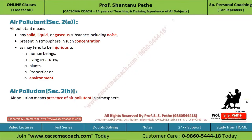The most important definition of this act is 'air pollutant' itself — note carefully, this definition appears in both exams. Air pollutant is defined under section 2A, and air pollution is defined under section 2B. Air pollutant means any solid, liquid, or gaseous substance including noise — do not forget this in the exam, as students normally skip it.